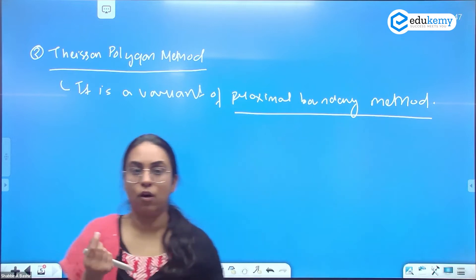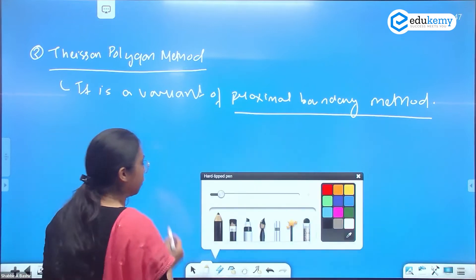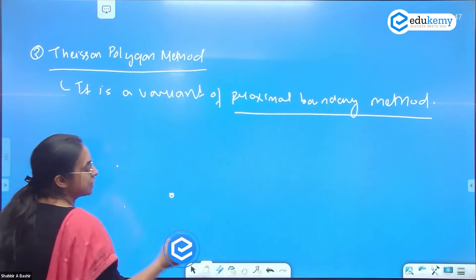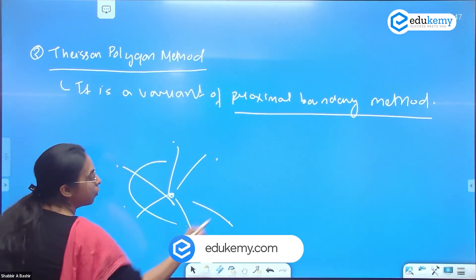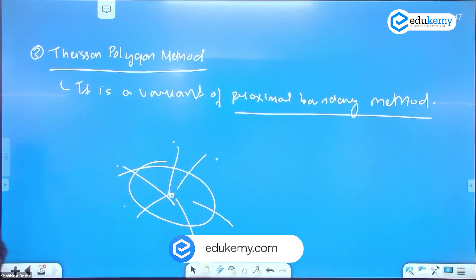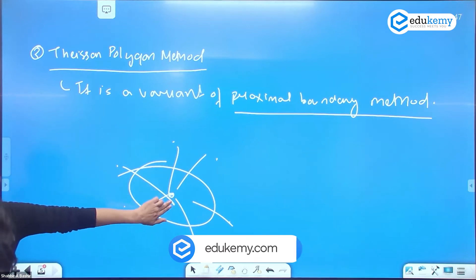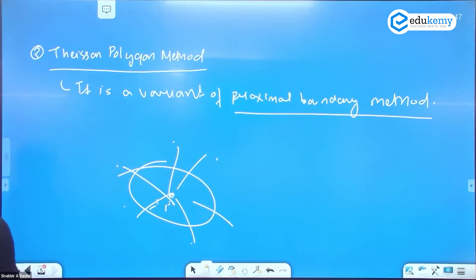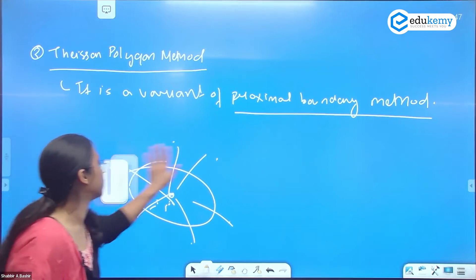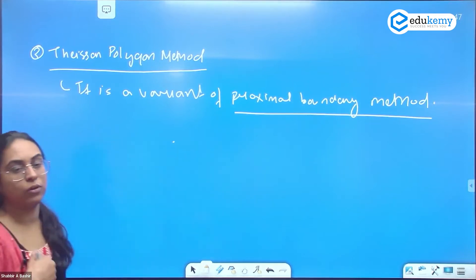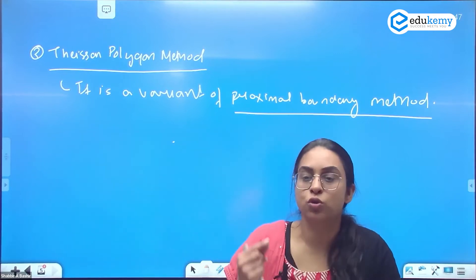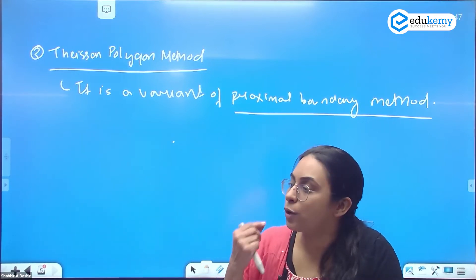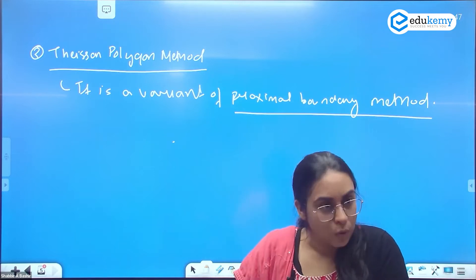Not only Bhopal — in the Thiessen polygon method, we take the main city and the secondary cities, connect them, take midpoints, and draw boundaries. So the proximal boundary method is for drawing the sphere of urban influence of only one city, while the Thiessen polygon method is used to demarcate the sphere of urban influence of more than one city.